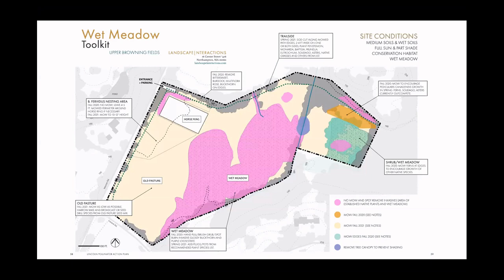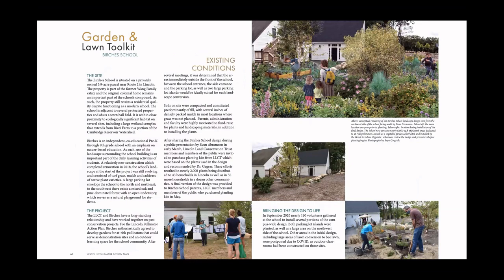Our wet meadow toolkit for Upper Browning Fields in Lincoln essentially just called for specific mowing changes to promote existing native plant communities, knock back invasives such as glossy buckthorn through spot burning and pulling, and plant just a few areas of the site minimally. Our toolkit for the Birches School was a big community collaboration — over 100 parents, students, and teachers came out for the planting. The site is less than an acre and really represents a residential landscape in the center of town, so it's quite appealing to private landowners, and many people have been following this design framework and plant list.